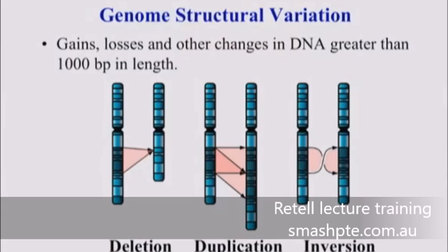Shown here in a simple diagram, we have an example of some structural variation, operationally defined as events greater than a KB in size. We have pieces of DNA that sometimes become deleted, pieces that sometimes become duplicated on chromosomes, and regions which can be inverted or turned around with respect to another orientation.